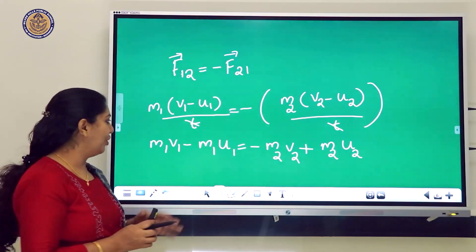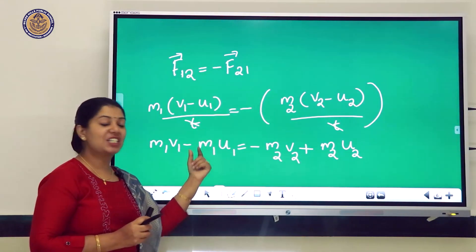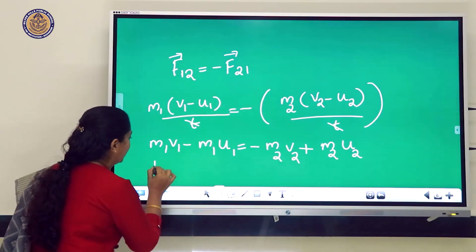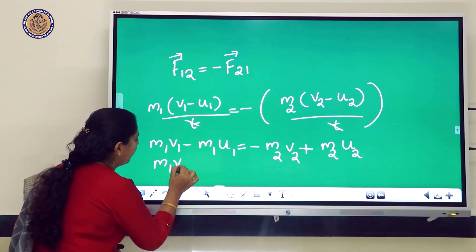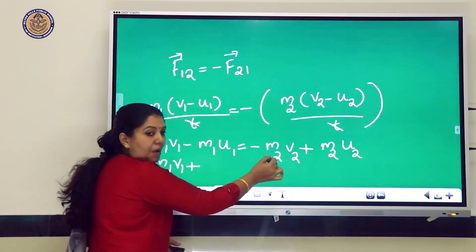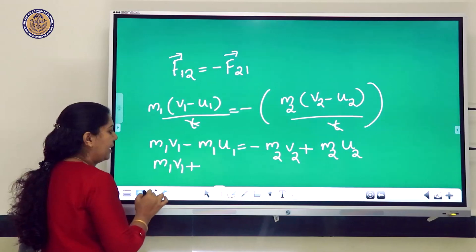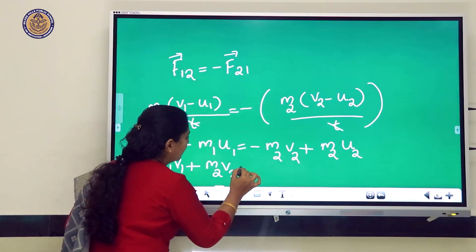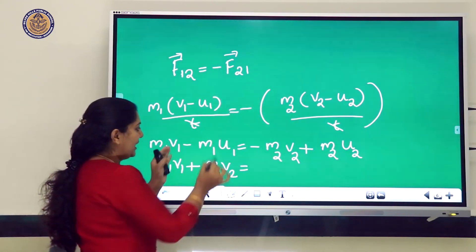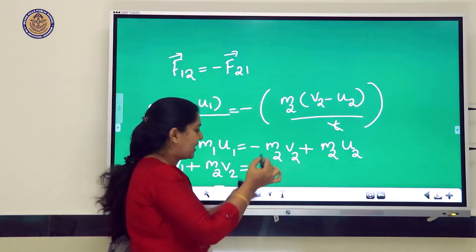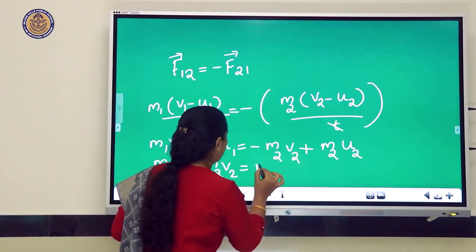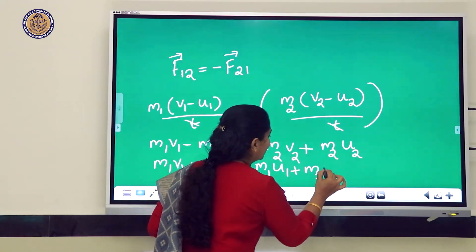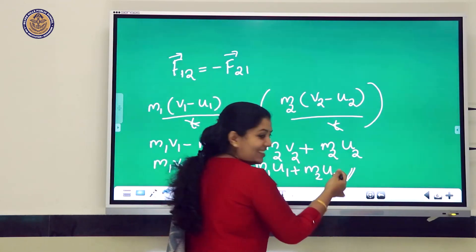Moving terms so all positive: m₁v₁ + m₂v₂ = m₁u₁ + m₂u₂. The term −m₂v₂ moves to the left side as +m₂v₂, and −m₁u₁ moves to the right side as +m₁u₁. This is our final result.